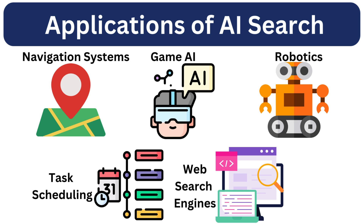AI search algorithms have applications everywhere. In navigation systems, search algorithms are used in GPS and mapping applications to find the shortest and most efficient route. In AI gaming, adversarial search powers strategic decision-making in games like chess, tic-tac-toe, and real-time strategy games. In robotics, path-finding algorithms help robots navigate environments, avoid obstacles, and reach destinations.